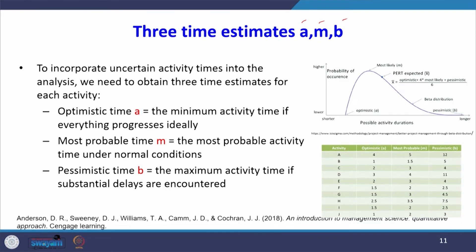The third time estimate is pessimistic time B: the maximum activity time if substantial delays are encountered. These three time estimates follow the beta distribution. The minimum time is optimistic time A, the longest time is pessimistic time B, and in between is the most likely time M. On the x-axis is possible activity duration and on the y-axis is probability.